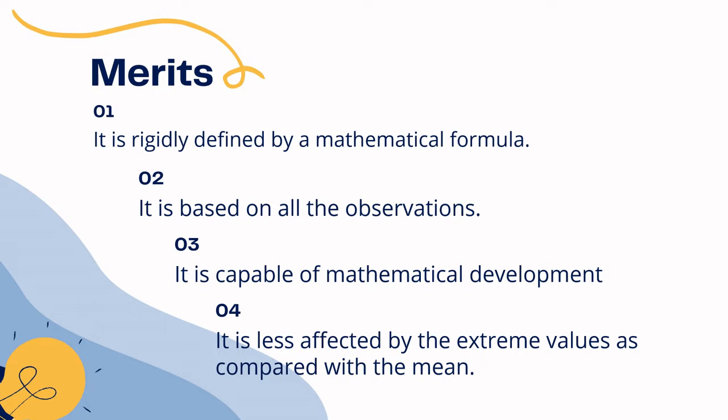Number four: it is less affected by extreme values as compared to the arithmetic mean. Extreme values are those which are outlying from your data set, and geometric mean is less affected by such extreme values compared to the mean.